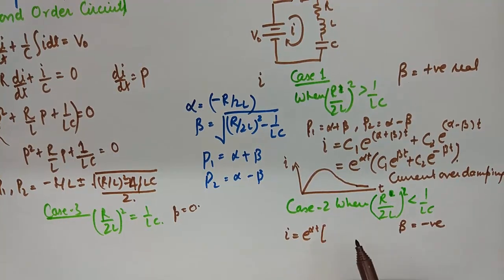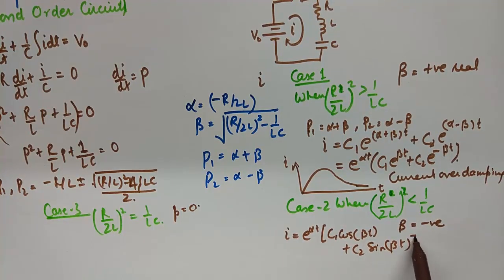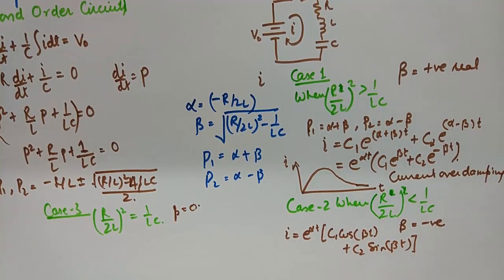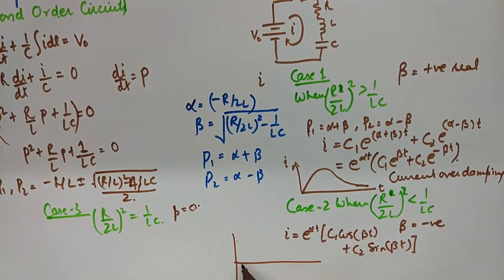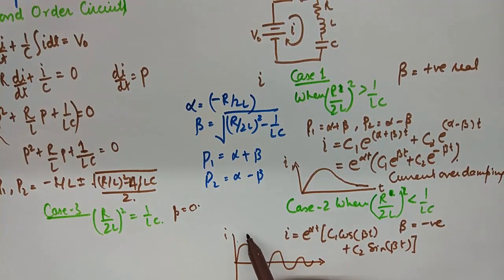And similarly from these cases you will find the instantaneous value of current which will be different for each case. I'll write down the final values. And the nature of the current in this case will be something like this. It will be a current oscillation scenario when we have beta coming out to be negative and imaginary.